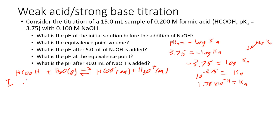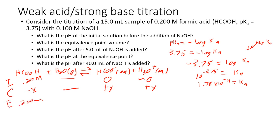For the change row: since we don't have any formate conjugate base, we can't gain more formic acid — it's the thing reacting — so we lose minus X of the acid. Both products are 1-to-1, so both gain plus X. At equilibrium: HCOOH is 0.200 minus X, and both HCOO− and H3O+ are X. We're going to assume X is small. For this Ka of 10 to the negative 4th, that's borderline but does hold — you can check afterwards.